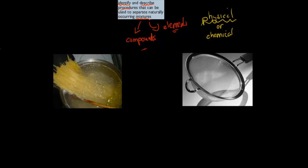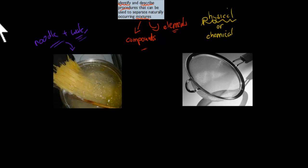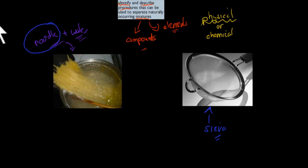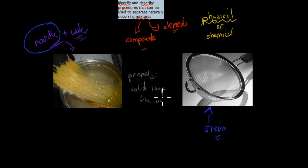Here are two pictures to give you a quick overview of what I mean when it comes to separating mixtures. This is a mixture of noodles, or spaghetti, and water. If you just want the noodles, what do you do? Well, we can use a sieve. Because noodles are obviously a lot bigger than water molecules, we just use a sieve to separate the noodles from the water. The property we use is the fact that the solid — the noodle — is larger than the water molecules, so only water passes through while the spaghetti gets stuck.